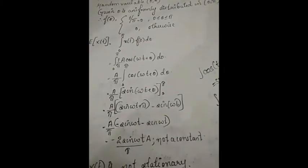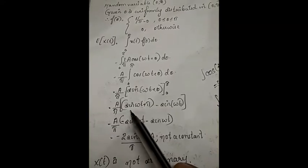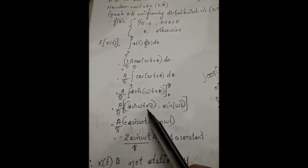This equals (a/π)·sin(ωt + θ) evaluated from 0 to π. That is (a/π) times [sin(ωt + π) - sin(ωt)].